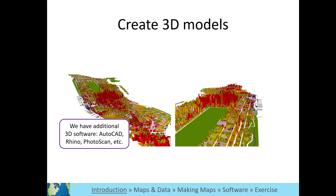You can also create 3D models and custom visualizations. In this example, buildings in New York City have been color-coded by land use and extruded vertically by height. It is also possible to create animations over time and record video fly-throughs on your map in GIS. There are also many other 3D softwares that you can use, including AutoCAD, Rhino, Photoscan, and more.